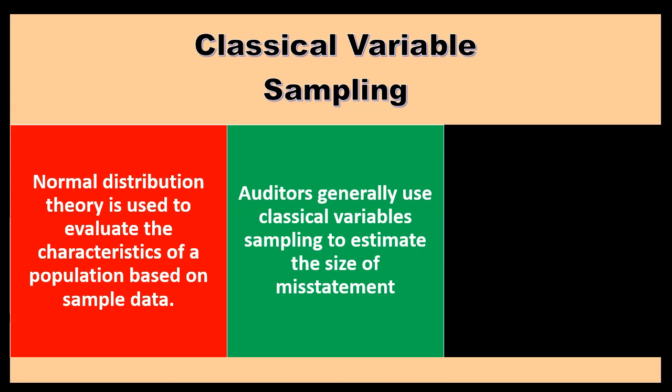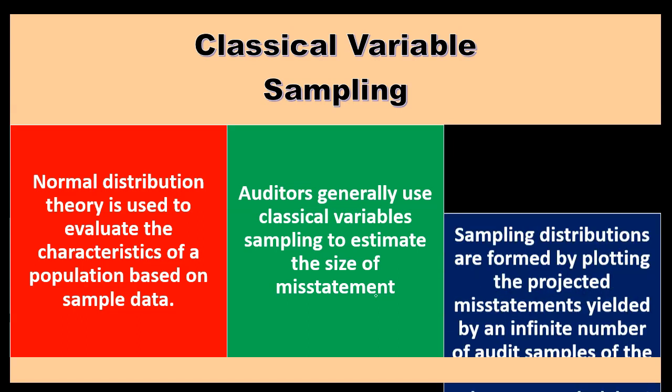Auditors generally use classical variable sampling to estimate the size of misstatements. When classical variable sampling is applied, it's typically used to estimate the size of misstatement.